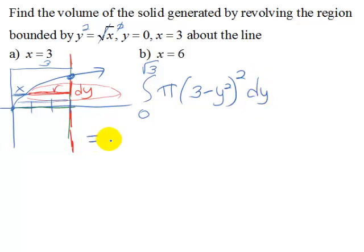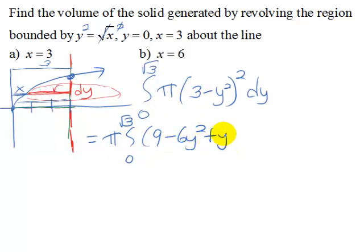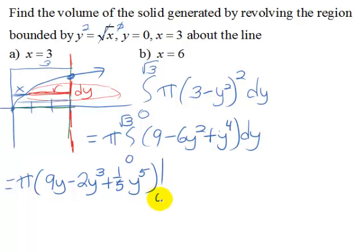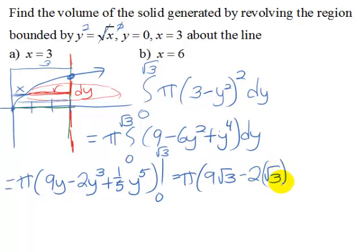To evaluate this integral, first we'll move the pi out in front, and then multiply this out, so that'll be 9 minus 6y squared plus y to the 4th, and that's dy. So that will be pi, and doing the integration, this would be 9y minus 2y to the 3rd plus 1/5 y to the 5th, evaluated from 0 to square root of 3. So pi multiplied by 9 square roots of 3 minus 2 square roots of 3 cubed plus 1/5 square root of 3 to the 5th.